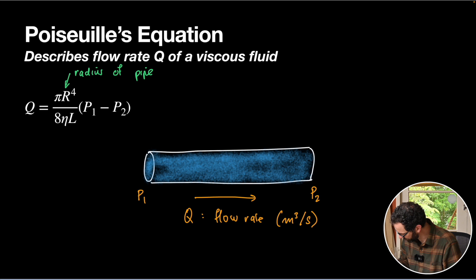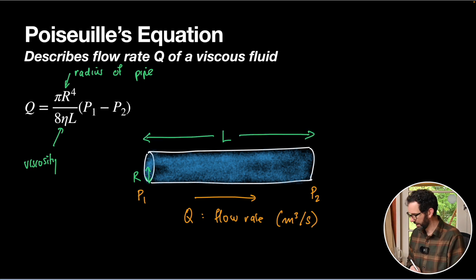Sometimes we use diameter in these equations, and sometimes we use radius. That is our radius, R. Eta, that's our viscosity, as we just talked about. And then L, that is the length of our pipe, because the longer our pipe, the more pressure we're going to need to get the same amount of flow. So that's got to be relevant in our equation.